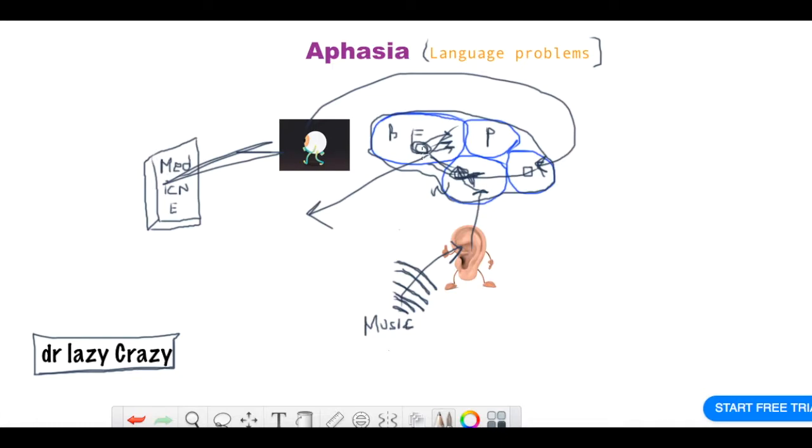And let's see, you have a lesion here in the arcuate fibers. Now your Wernicke's area is okay, Broca's area is good, your primary cortex area is good, but the signal between them is damaged. So this area is good - you understand - but then you have a problem getting the words out.